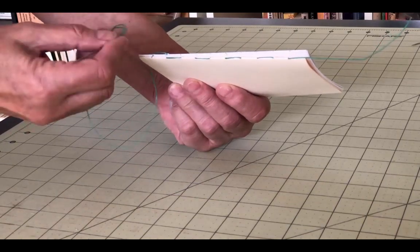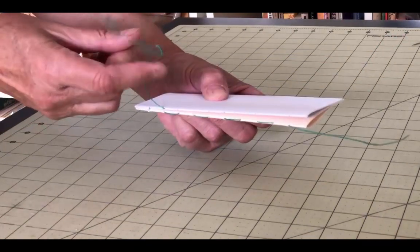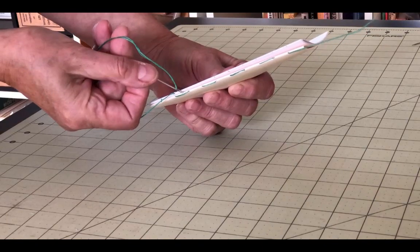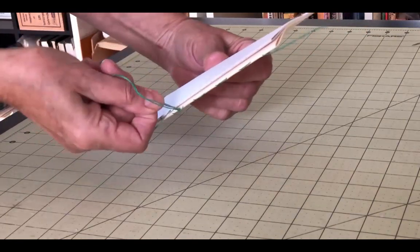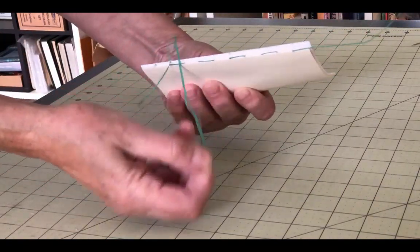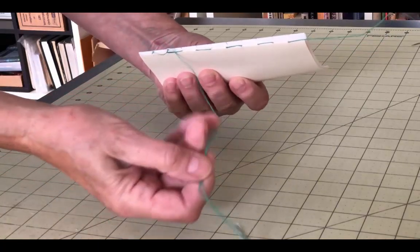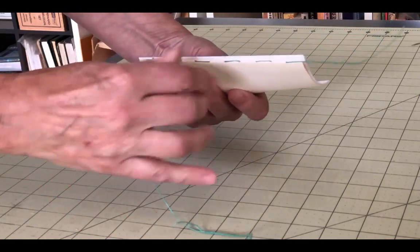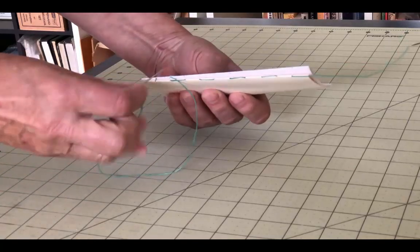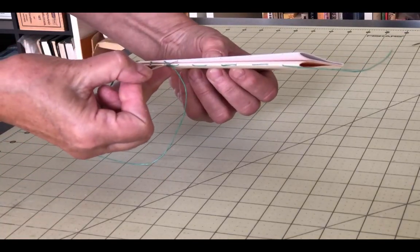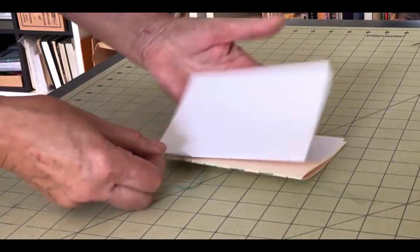So, instead of using the point of the needle, I turn the needle around and lead with the eye of the needle. This way, there's never a risk of accidentally piercing part of the thread I am looping around. You can certainly choose to use the point of the needle. Just be aware and careful not to grab what you don't intend to grab. Sew back into the hole in the second signature and you have completed the first linking stitch.